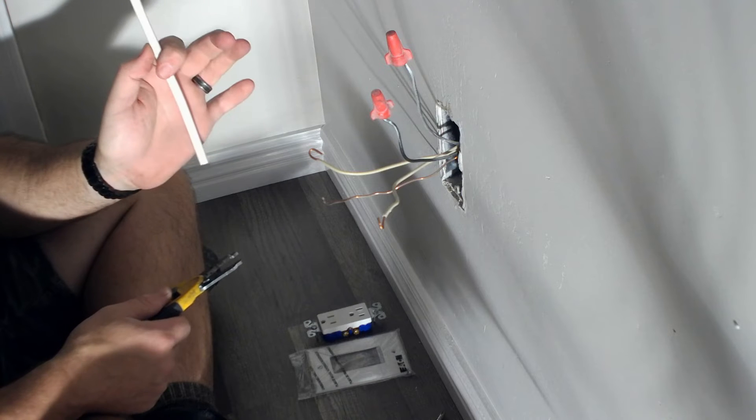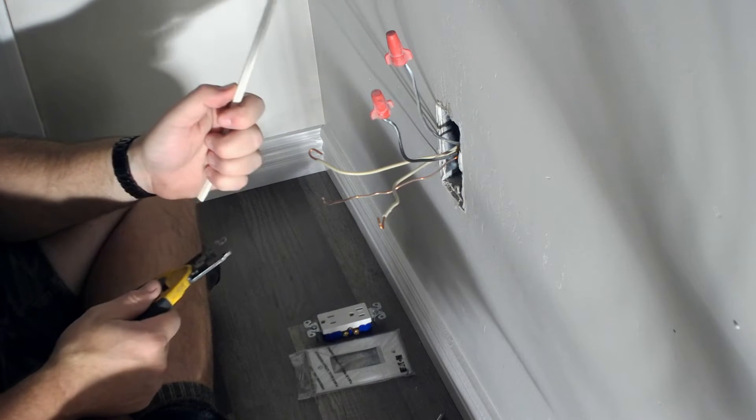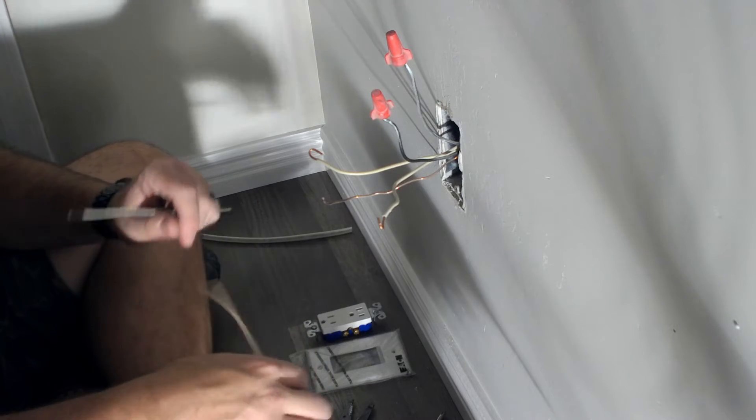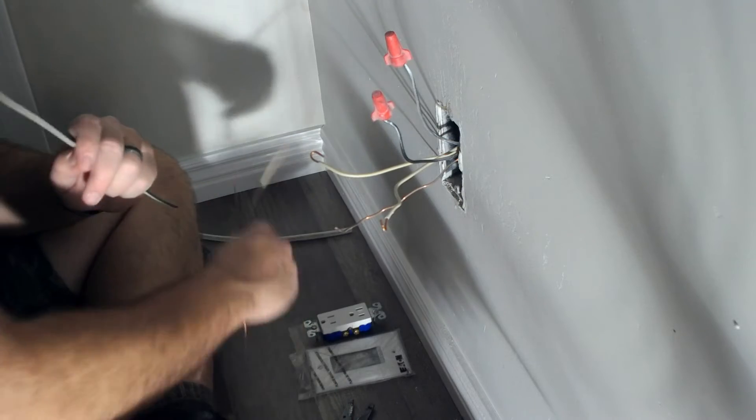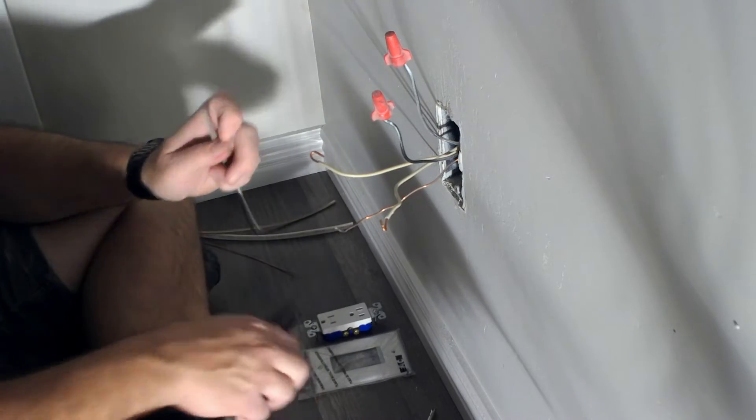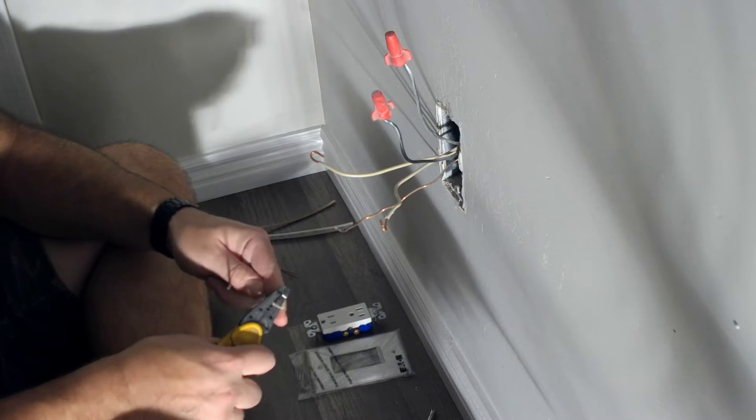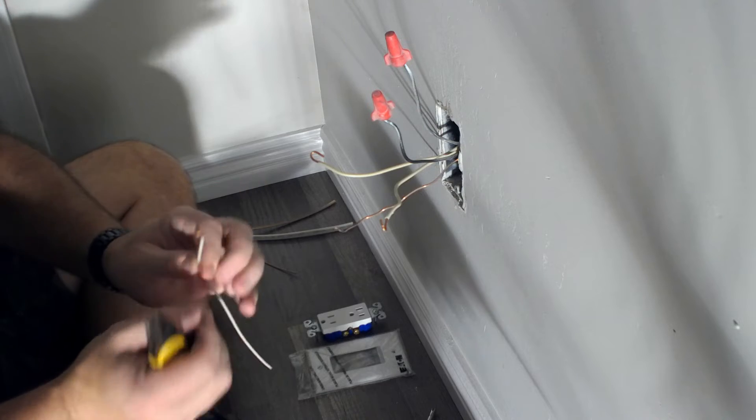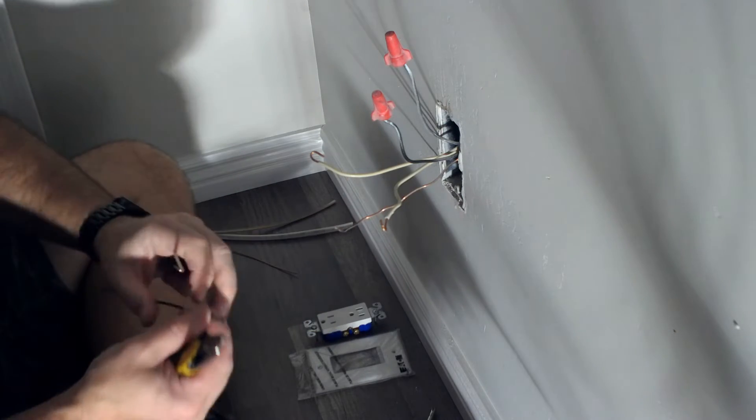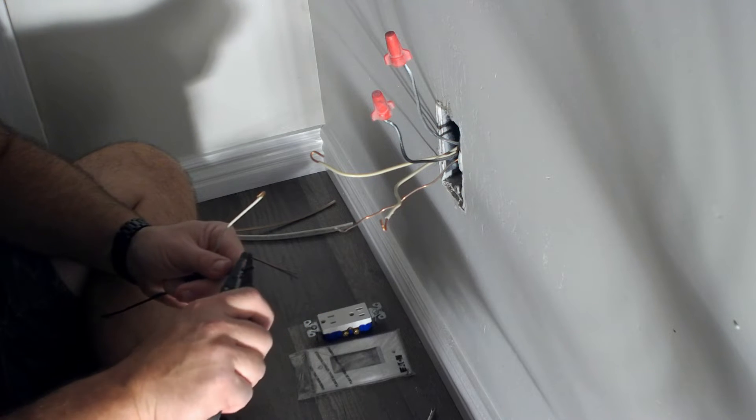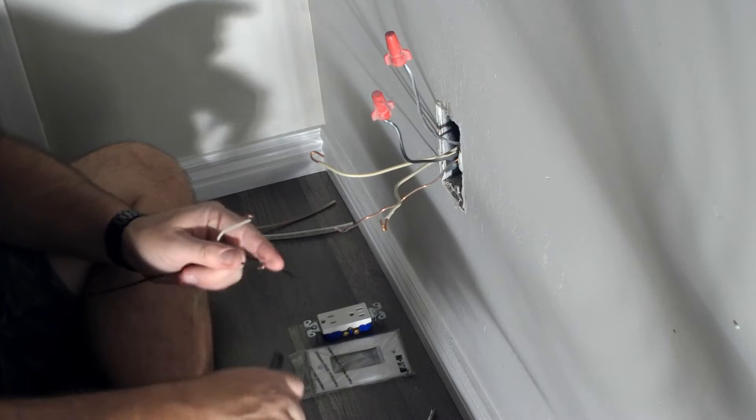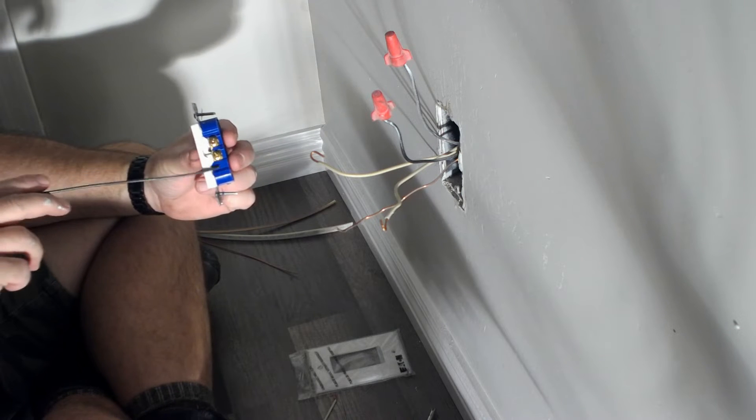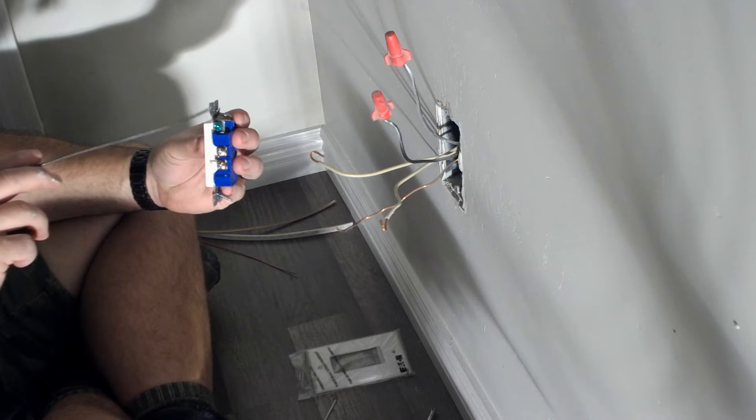Before we even mess with any of those wires, we're going to go ahead and put pigtails on our plug. So what I'm doing here, I've got my little piece of Romex. I'm going to push the wire up out of the top there and then I can grab it and pull it out. Now the ground is properly connected, so I don't need to mess with that. I just need a black and a white wire. We'll take our strippers. We're going to strip off about half to three quarters of an inch and then bend a little hook in it.